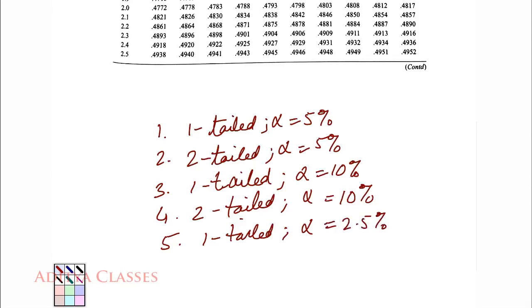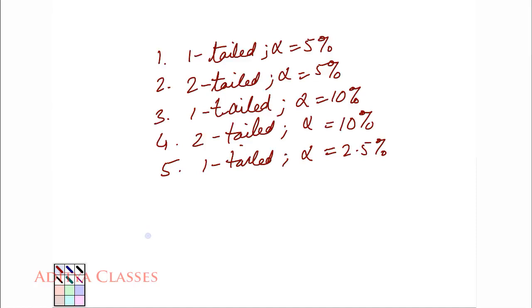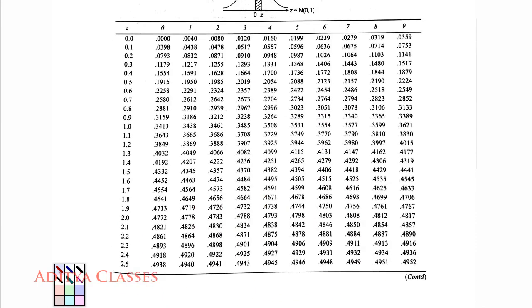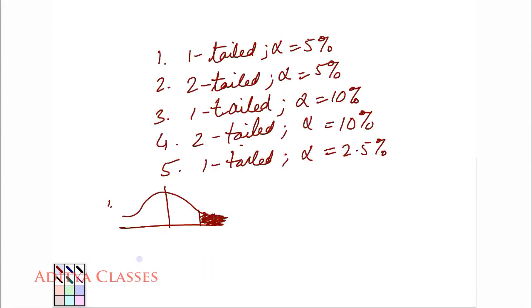So we will learn with these questions how do we go about it. Now let me take my first question. What is the first question, it is 1 tailed. So we have a rejection region only in 1 tail. Now try and understand. The areas given here are for this area, understanding? Just now I made the graph and I told you that the areas given in the table are for these areas, this section.